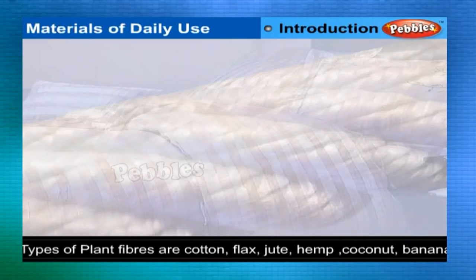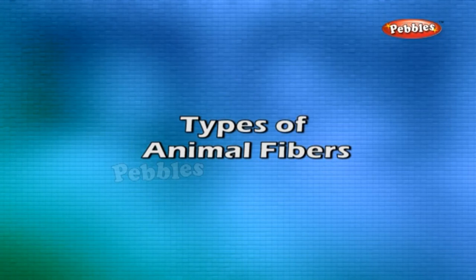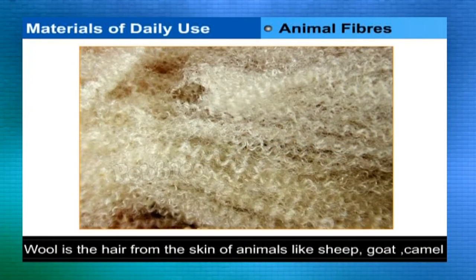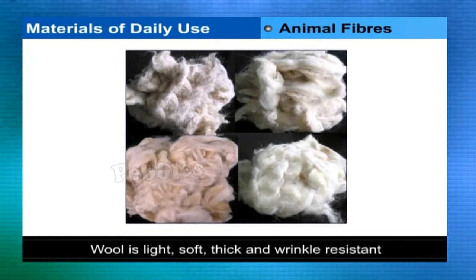Different types of plant fibers are cotton, flax, jute, hemp, coconut, and banana. Types of animal fibers include wool, which is the hair from the skin of some animals like sheep, goat, and camel, which are twisted to make long strands.